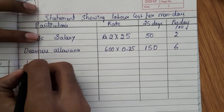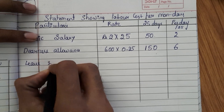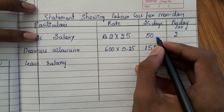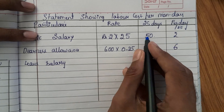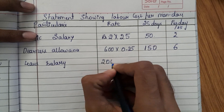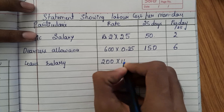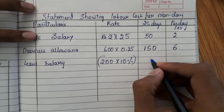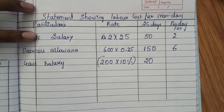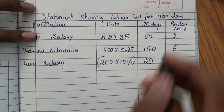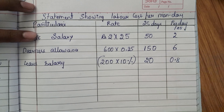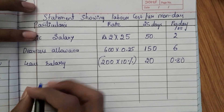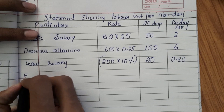The third component is leave salary. It is 10% of the above two: 150 plus 50 is 200. On that 200 we calculate 10%, so 200 into 10% equals rupees 20 for 25 days. Dividing 20 by 25 gives 0.8 rupees, which is 80 paisa per day.